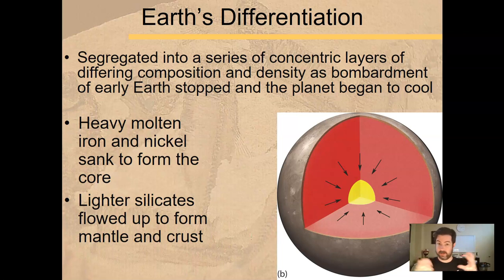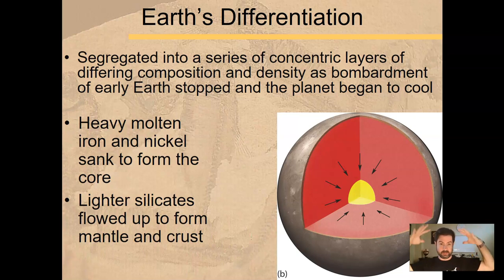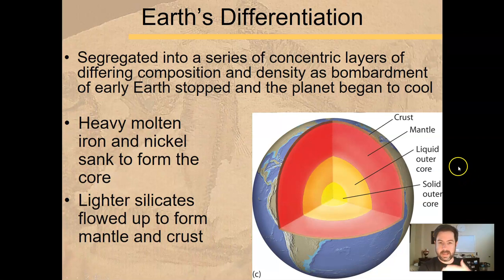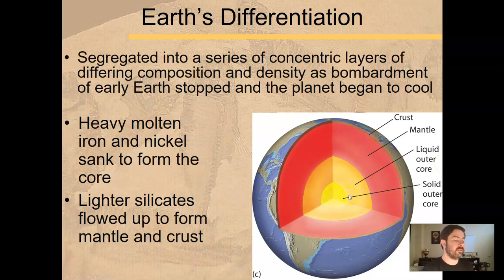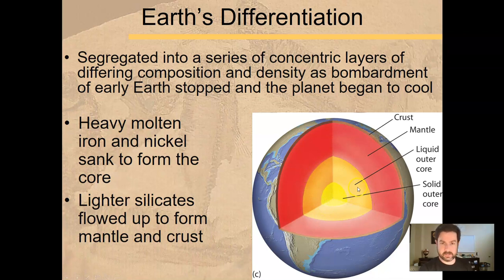So as Earth began to calm down, cool, and differentiate, it began to separate itself out. We have the solid inner core, made up of primarily iron and nickel. We have the liquid outer core — still primarily iron and nickel, but in a liquid state.